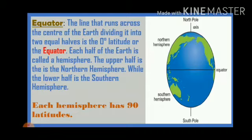Each half of the earth is called a hemisphere. The upper half is known as the northern hemisphere, while the lower half is the southern hemisphere. The equator divides the earth into these two hemispheres: northern hemisphere and southern hemisphere. Each hemisphere has 90 latitudes, so northern hemisphere has 90 latitudes and southern hemisphere also has 90 latitudes. So 90 plus 90 equals 180, plus one equator, equals 181 total latitudes.